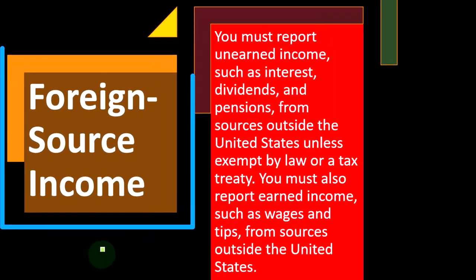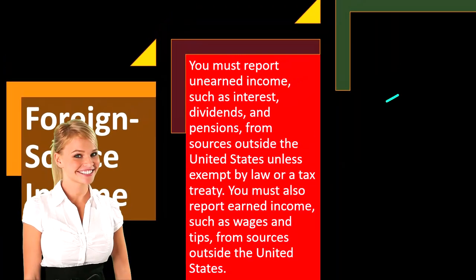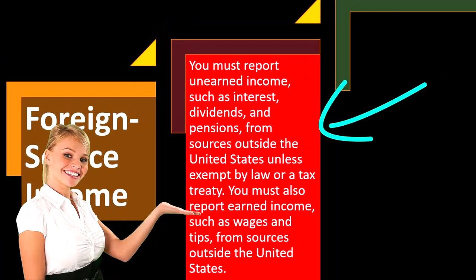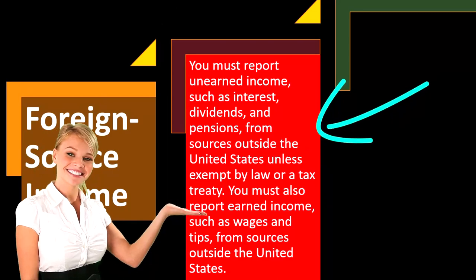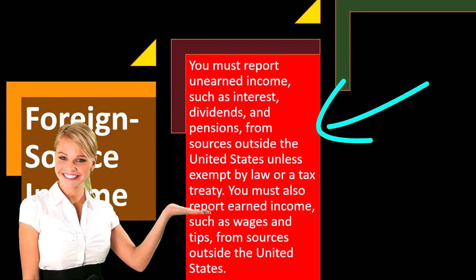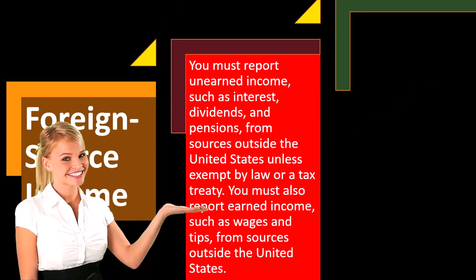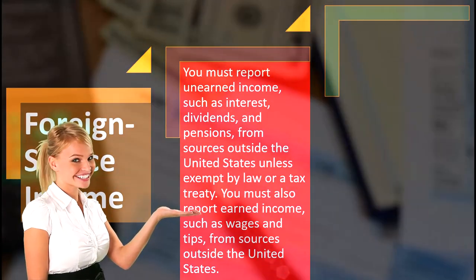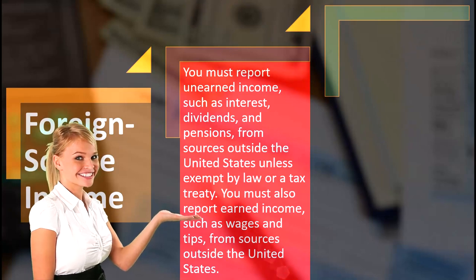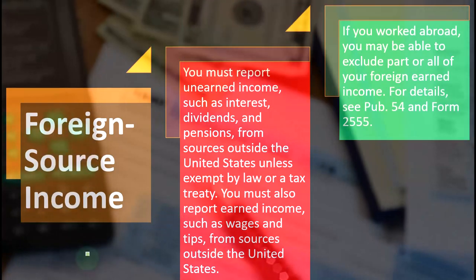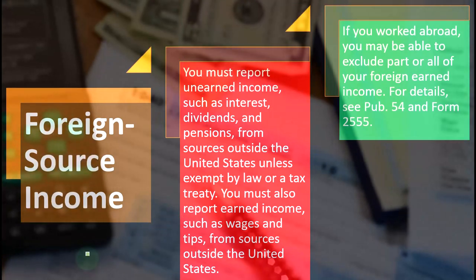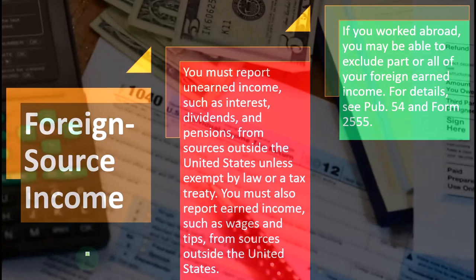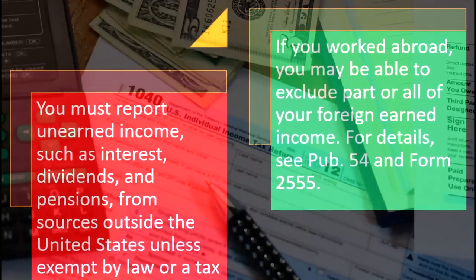Foreign source income: you must report unearned income such as interest, dividends, and pensions from sources outside the United States, unless exempt by law or a tax treaty. You must also report earned income such as wages and tips from sources outside the United States. If you worked abroad, you may be able to exclude part or all of your foreign income.